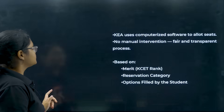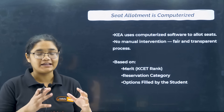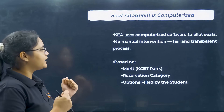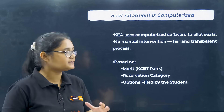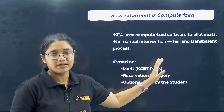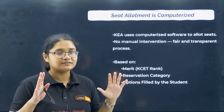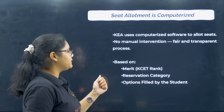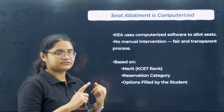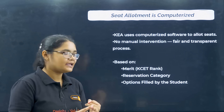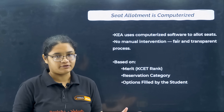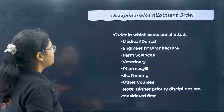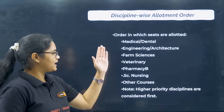Seat allotment is completely a computerized process. Different types of software are used and there is no manual intervention, ensuring a completely transparent process where nobody can cheat. The allotment is done based on three things: the seat matrix, your category, and the option entry that you have filled.